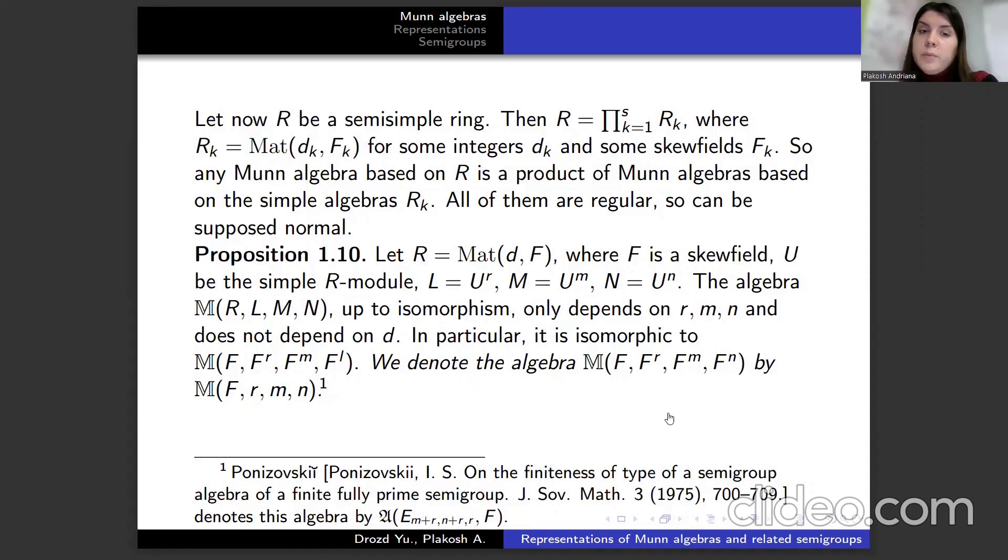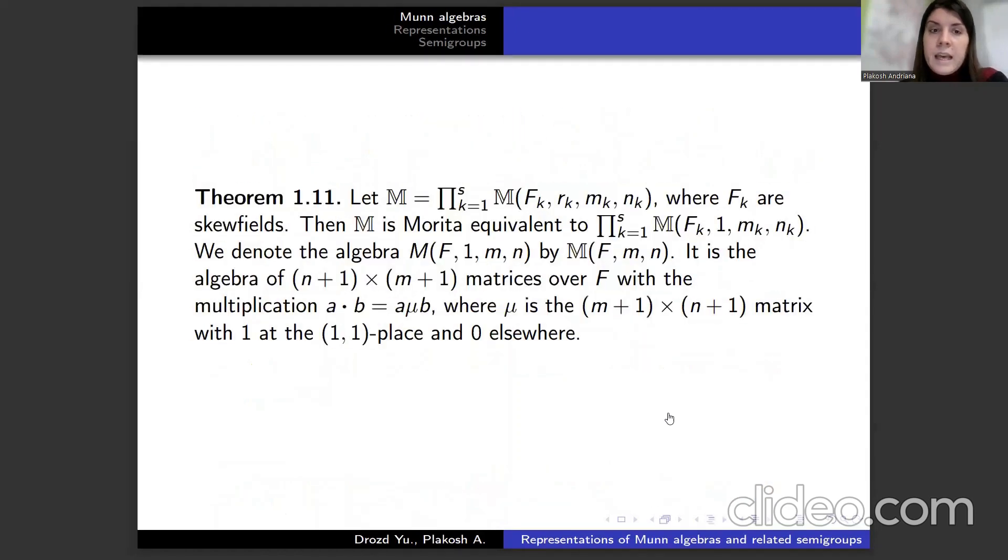Up to isomorphism only depends on R, m, n, and does not depend on ℓ. In particular, it is isomorphic to M(F, F^m, F^n). We denote the algebra M(F, F^m, F^n) by M(F, m, n).